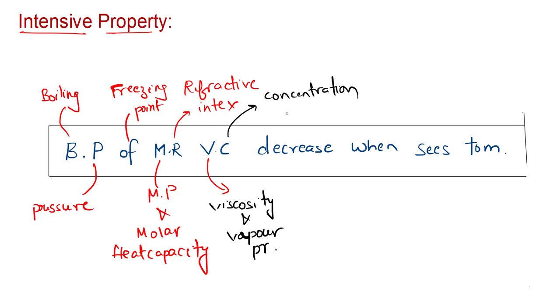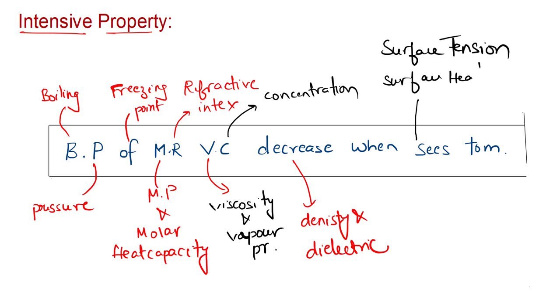VC denotes viscosity. The density can be denoted - decrease denotes density and dielectric. For C, it's going to be two properties, so one is going to be surface tension and surface heat capacity.